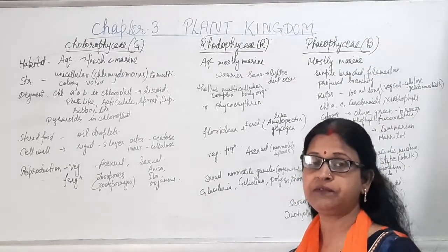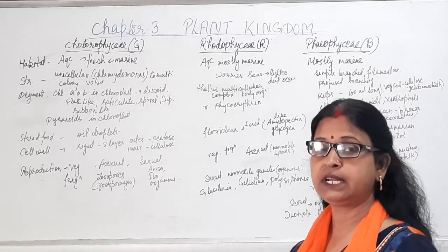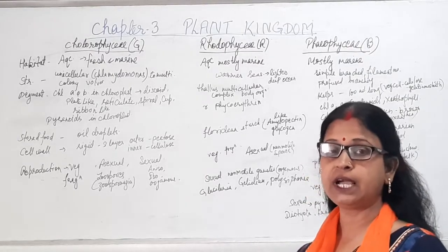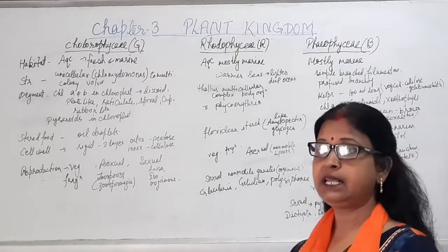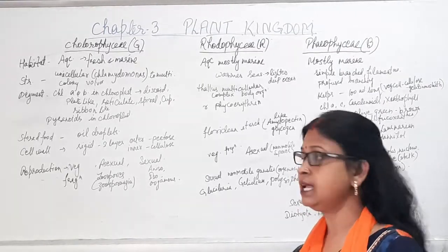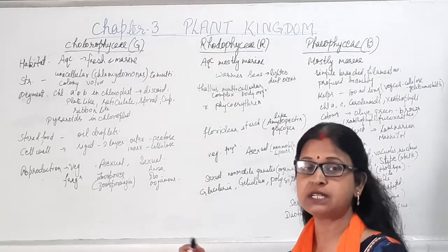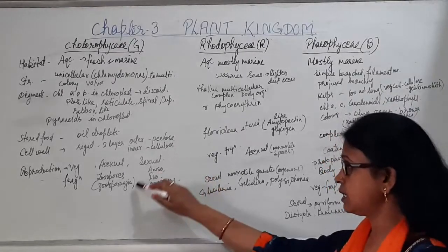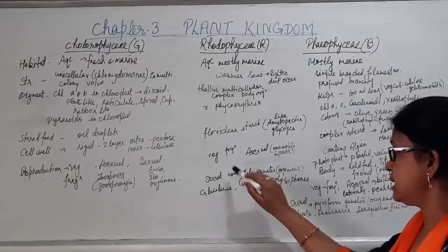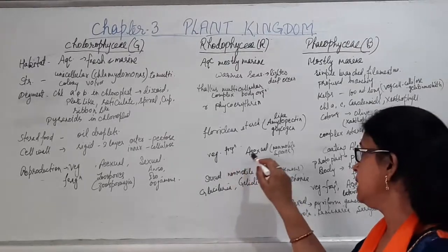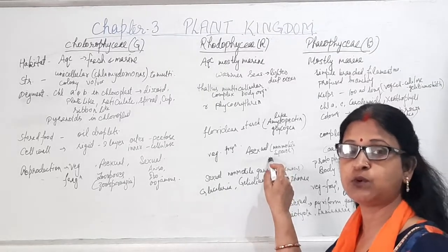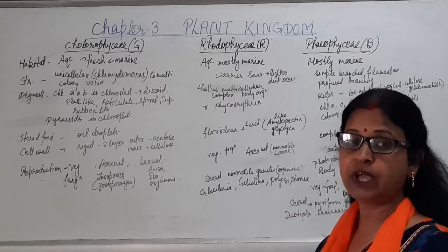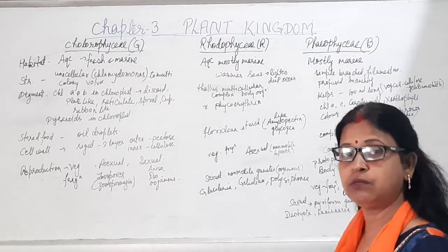In anisogamy, both gametes are of different types — we can differentiate them regarding their structure, shape, etc. In oogamy, the female gametophyte produces non-motile, larger gametes in the form of eggs, while the male gametes are smaller and motile. After fusion it is known as oogamy. In Phaeophyceae, the same three types of reproduction occur: vegetative by fragmentation, asexual by non-motile spores, and sexual by oogamy where the gametes are non-motile.